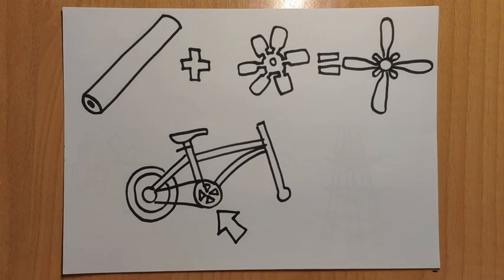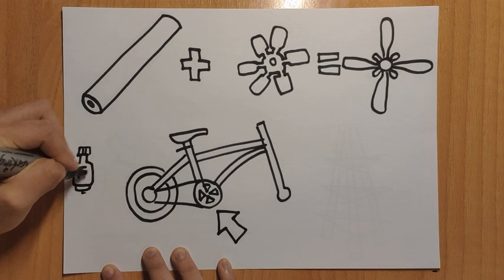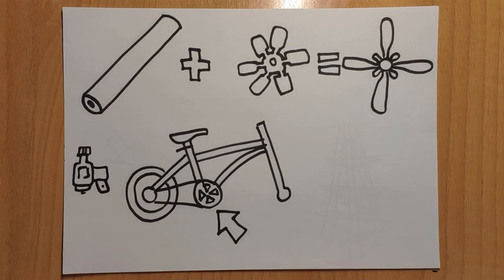Then, the dynamo. This is where the magic happens. He attached it to the tire, so its movement would activate the magnets inside the dynamo.